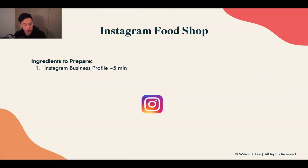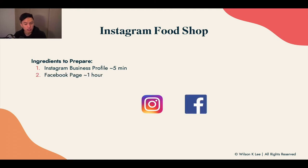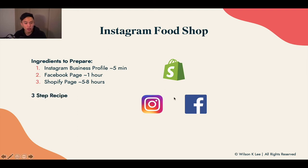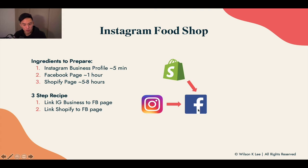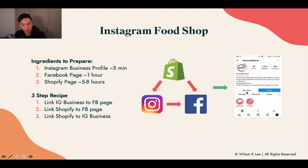Now, for Instagram shop, there are three ingredients to prepare. First, you need an Instagram business profile, which takes around five minutes to set up. Next, a Facebook page for your food business, which takes roughly an hour to make. And a Shopify page, which takes roughly five to eight hours. Once you have these ingredients prepared, you're going to link up your Instagram business page with your Facebook page, then link your Shopify with your Facebook page, then link your Shopify with your Instagram page — and that's when you can have this View Shop button.